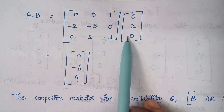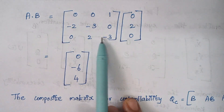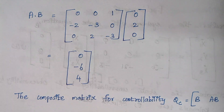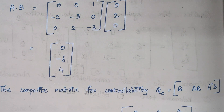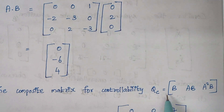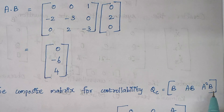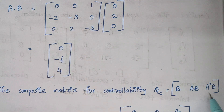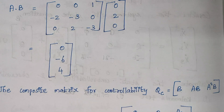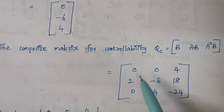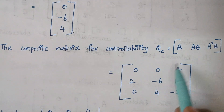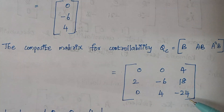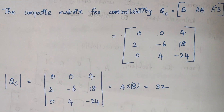These two things are directly available from the problem. When you multiply those two matrices you end up with the AB result. For controllability, the composite controllability matrix QC equals [B | AB | A²B]. We know B, we have calculated AB, and we previously calculated A²B. Just substitute the values: this column is B, this column is AB, and this column is A²B.